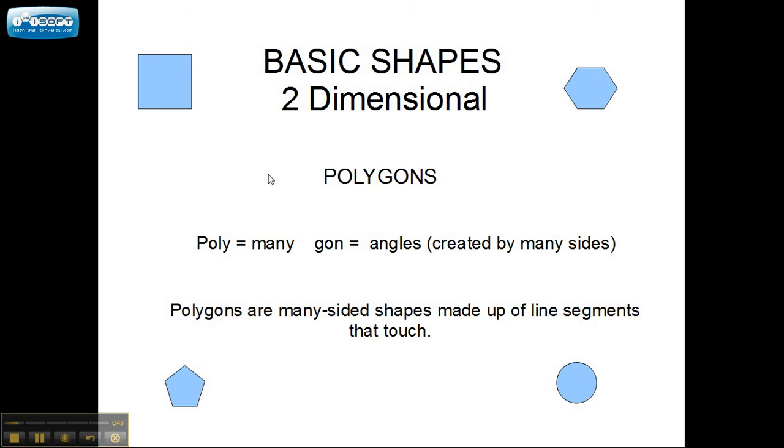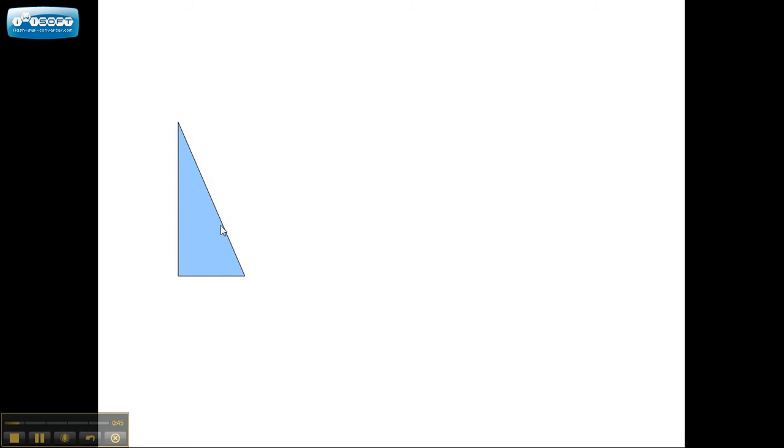So let's take a look at some of the basic polygons. First of all, we see one that's very familiar to us. This is the triangle. Tri means three. So there are three angles and three sides to this triangle. And they come in different sizes and shapes, as you know.